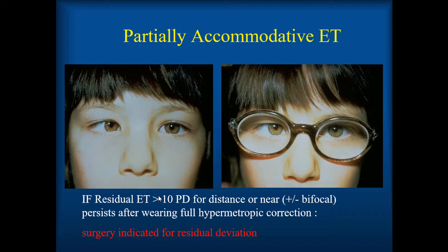The problem patients are the partially accommodative ones. If there's a residual ET of greater than 10 prism diopters for distance or near, with or without a bifocal, which persists after wearing the full hyperopic correction, then surgery is indicated for the residual deviation — not for the full deviation, but for the residual deviation.